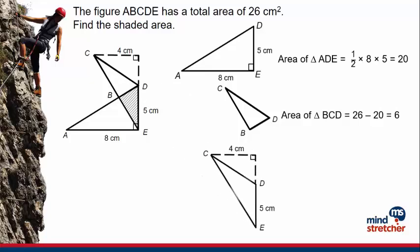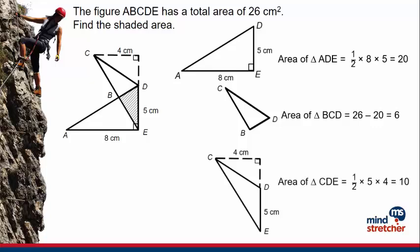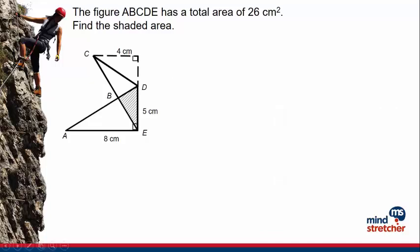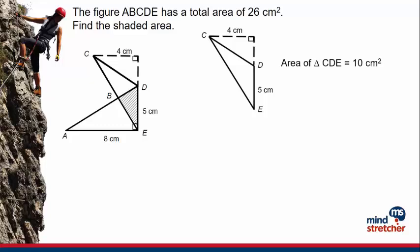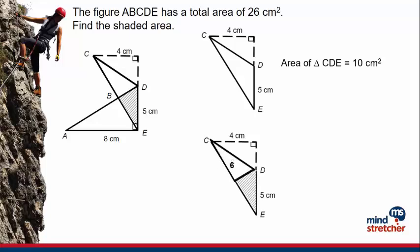We will now find the area of the second triangle. You will first need to identify the base and height of this triangle. The base and height are perpendicular to each other. Therefore, the area of triangle CDE is half times 5 times 4, which gives us 10. Since the area of triangle CDE is 10 and the area of triangle BCD is 6, we find the shaded area by subtracting 6 from 10. Hence, the shaded area is 4 square centimeters.